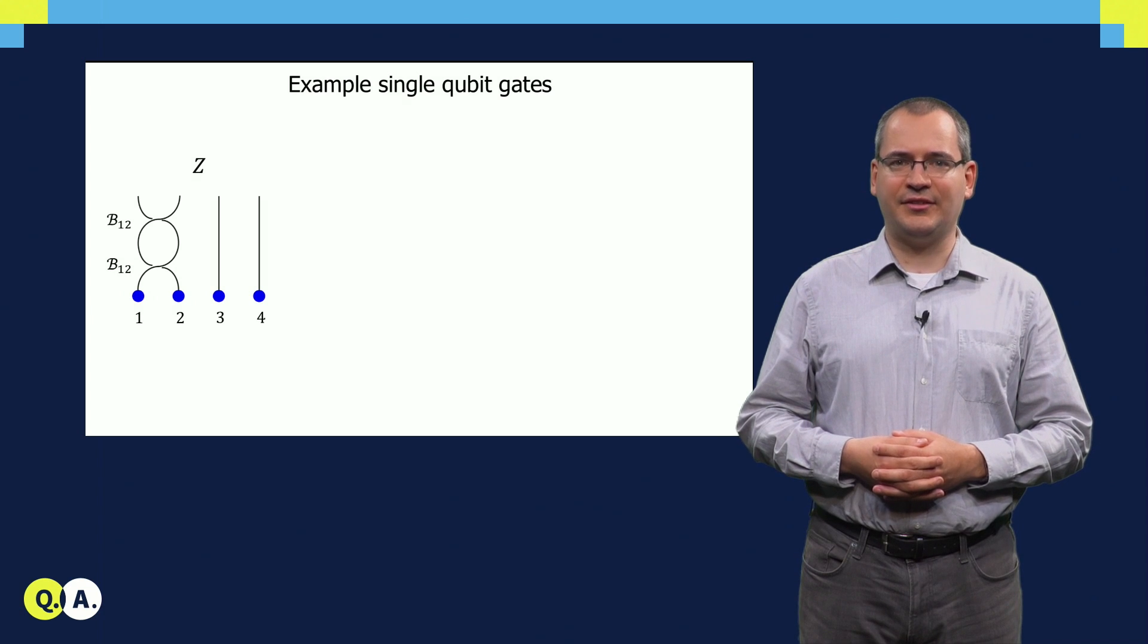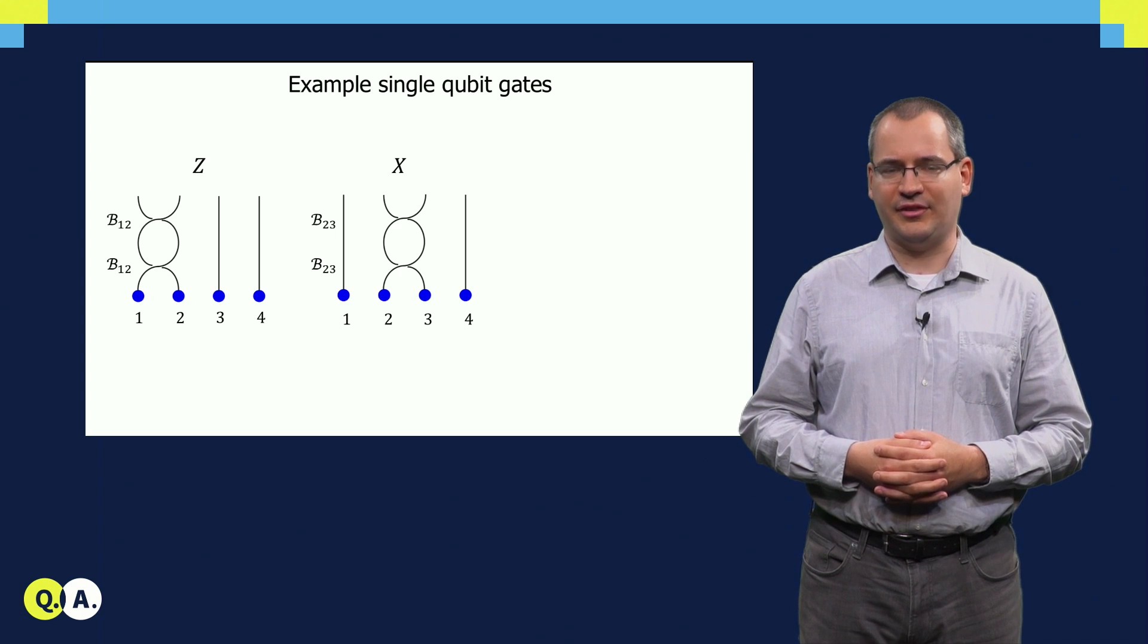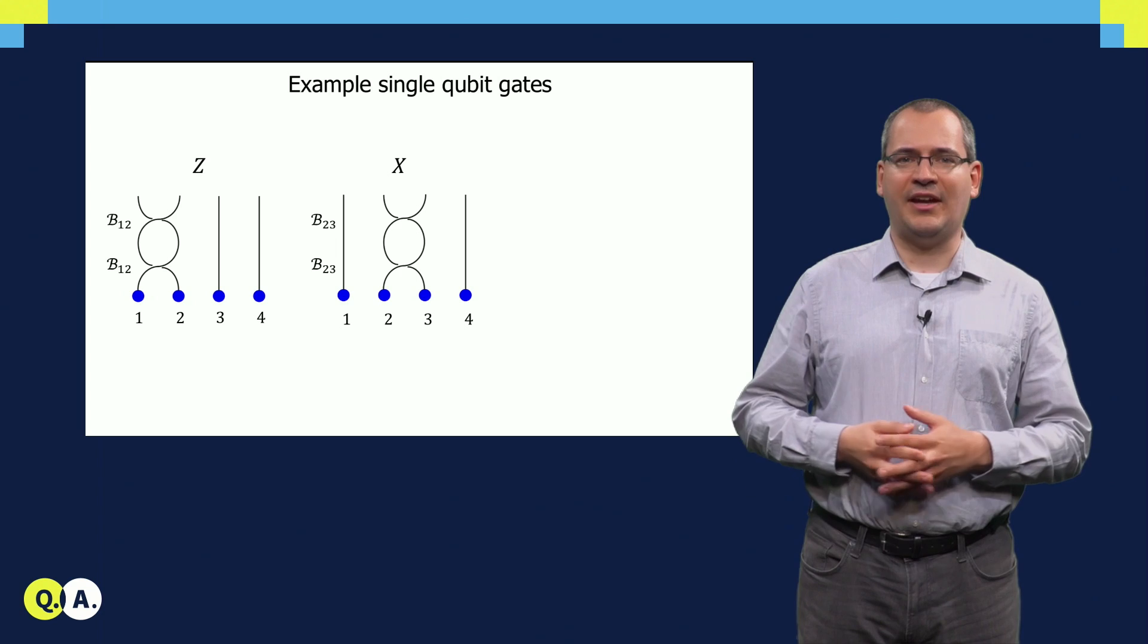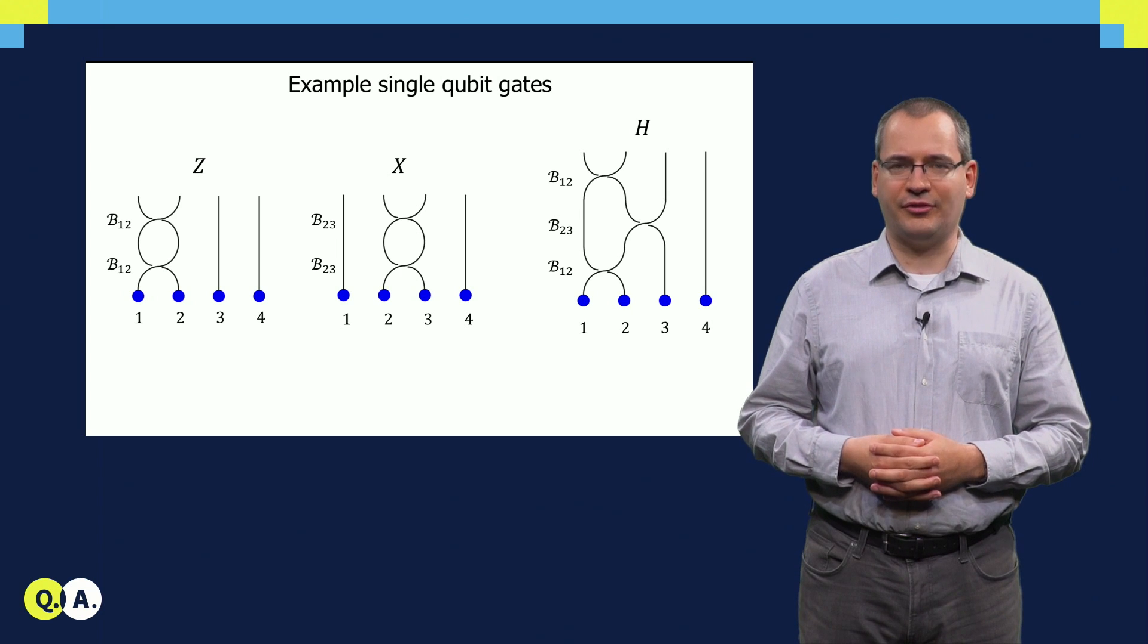We can create a Z gate by exchanging a pair of anyons twice. On the same system, the exchange of another pair corresponds to an X gate. Or, the Hadamard gate can be performed by sequential braiding operations on these anyons.